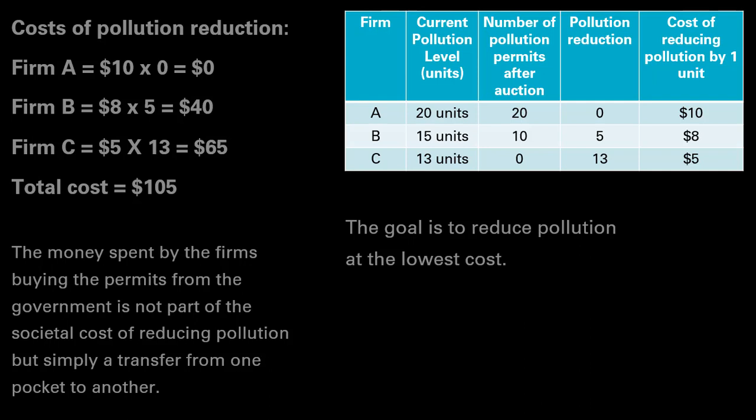One thing to note: the money spent by the firms buying the permits from the government is not part of the societal cost of reducing pollution, but simply a transfer from one pocket to another — in this case, from the firms to the government. The goal is to reduce pollution at the lowest cost, and this method of auctions or tradable permits achieves that goal. That's it — I hope you found this video helpful.